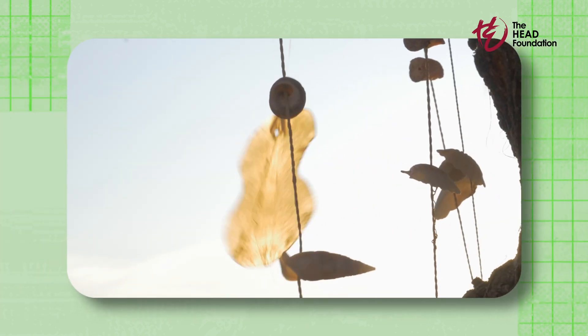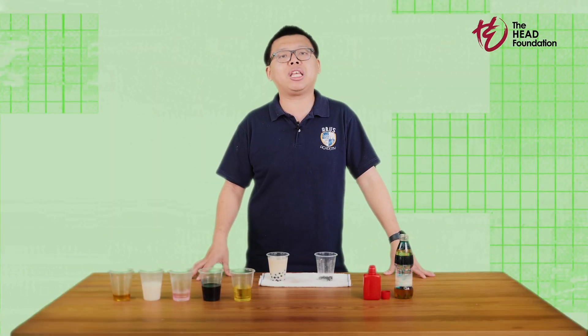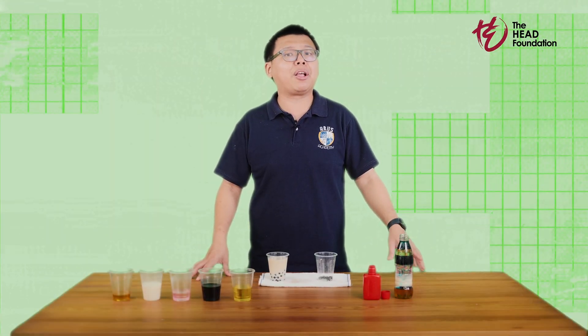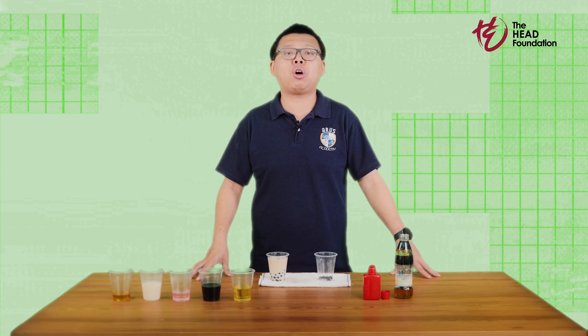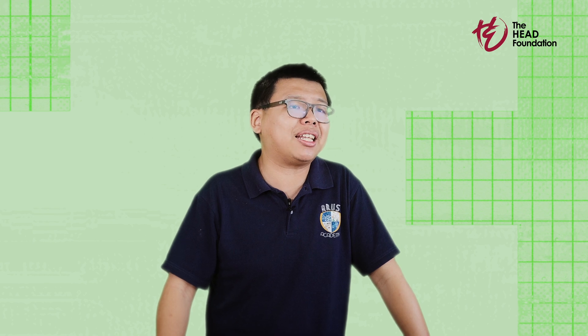Or look at a glass of soft drink — see those bubbles rising to the surface? That's density in action. The gas in the bubbles is less dense than the liquid, so it floats. Not only that, hot air is less dense than cold air, which gives us hot air balloons, wind, or even global weather patterns. If I were to repeat the same experiment with hot and cold water, you will see that the hot water remains floating on top of cold water because it is less dense. Density is everywhere in our lives.